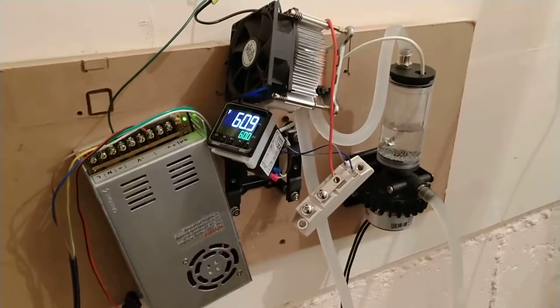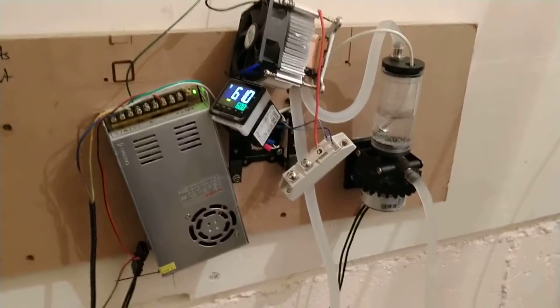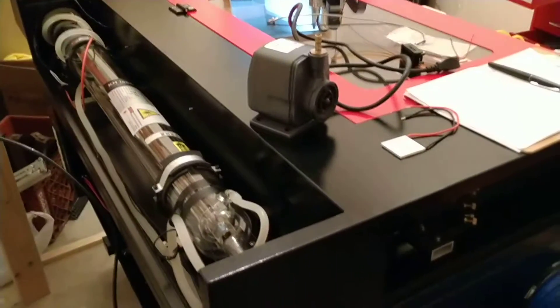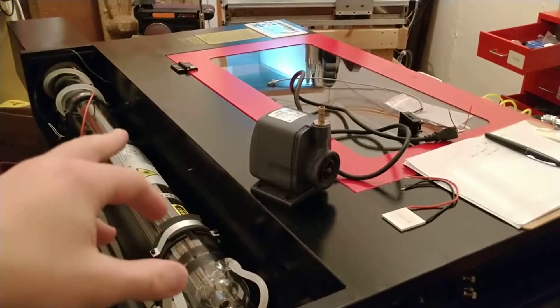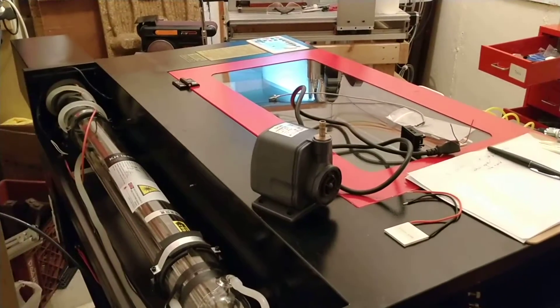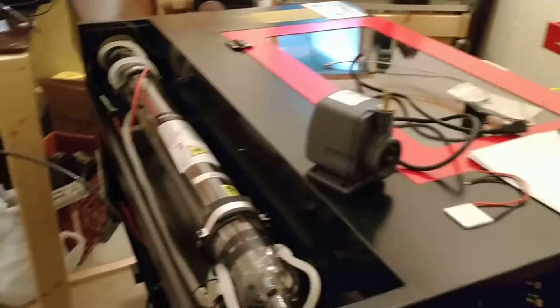Alright, so this is a prototype of my phase change water chiller for my Retsail X700 eBay clone. You find these all over eBay. This specific model is the 100 watt, which is actually 80 watts, more on that later.